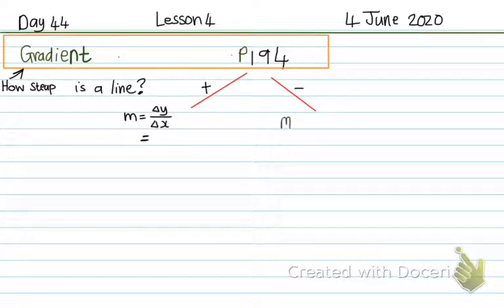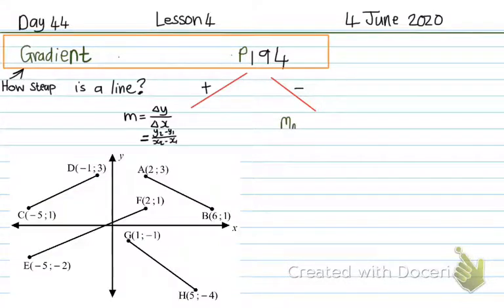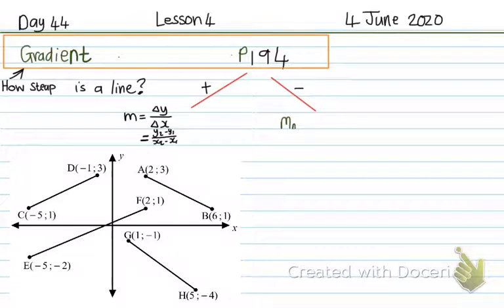So what is the formula for a gradient? The gradient is delta y over delta x, and that is y2 minus y1 over x2 minus x1. Delta is the capital letter D in the Greek language, and it stands for the difference in y over the difference in x — the y value subtracted over the x values subtracted.